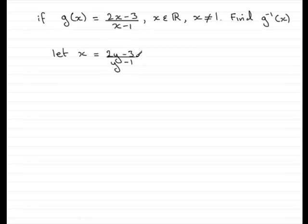What we need to do is to now make y the subject. So I'll multiply both sides by y minus 1, so that I can remove that from the denominator. So we'd have x multiplied by y minus 1 equals 2y minus 3. Now I need to expand the bracket. So if we do that, we get xy minus x equals 2y minus 3.